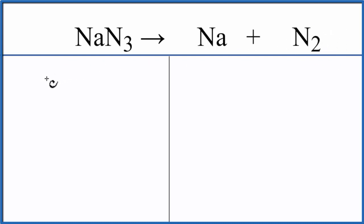So to balance it, let's add the atoms up on each side. Sodium, we have 1, and then nitrogen, we have 3. On the product side, we have 1 sodium and 2 nitrogens.